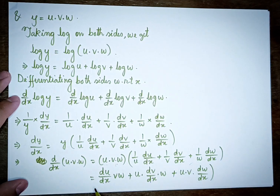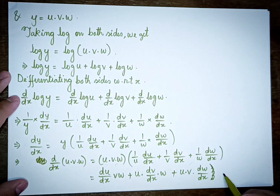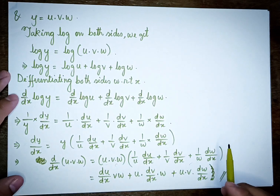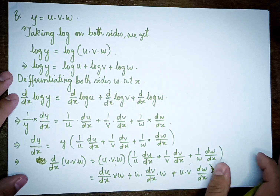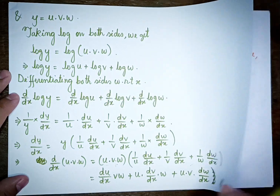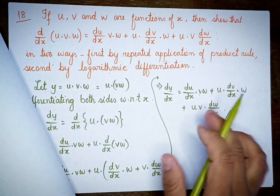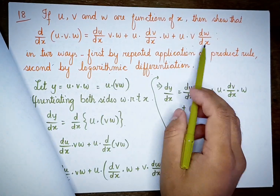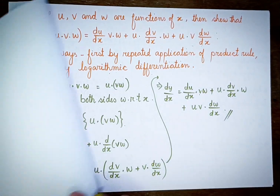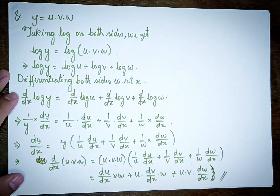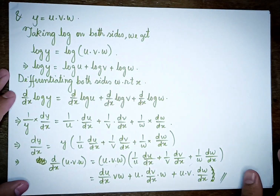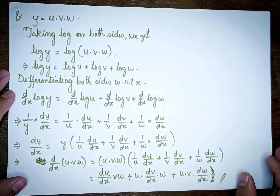Both the repeated application of the product rule and the logarithmic differentiation method give the same result, confirming the identity.